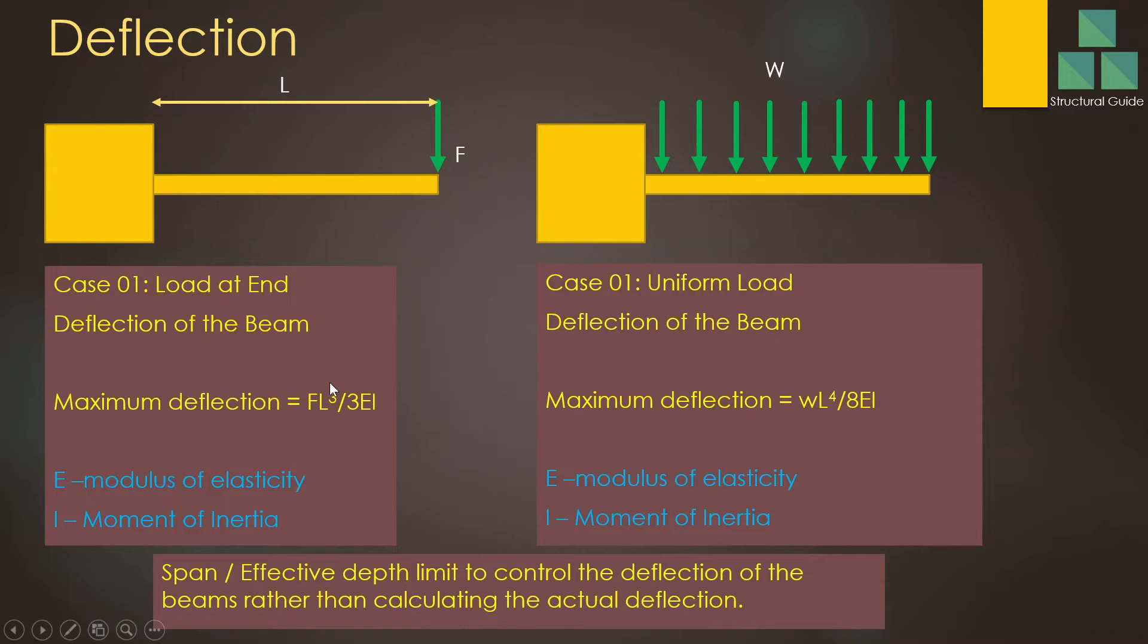F L cubed over 3 E I. That's F times L to the power 3 divided by 3 E I. This is the equation that we can use to calculate the bending moment. Here E is the modulus of elasticity and I is the moment of inertia.